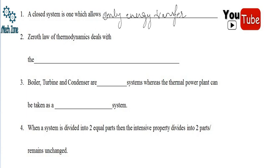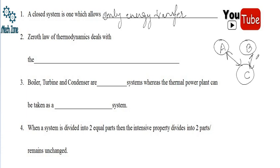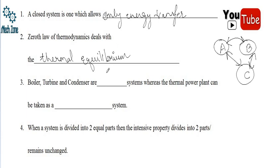The second question: the zeroth law of thermodynamics deals with — blank. If bodies A and C are in thermal equilibrium, and B and C are also in thermal equilibrium, then according to the zeroth law A and B will also be in thermal equilibrium. So the zeroth law of thermodynamics deals with thermal equilibrium — it establishes thermal equilibrium.